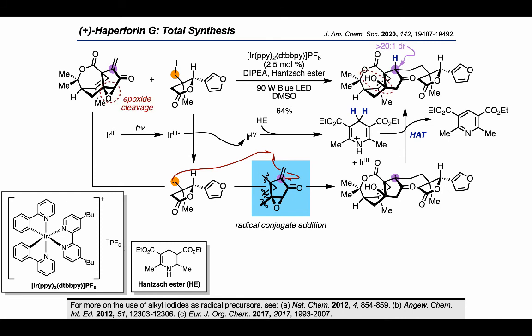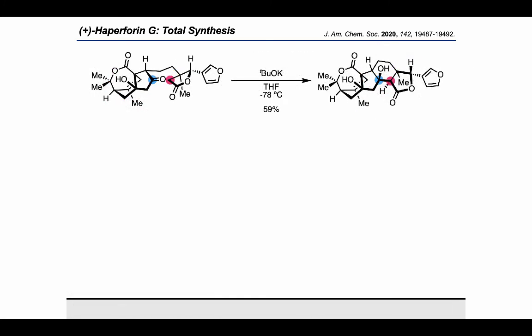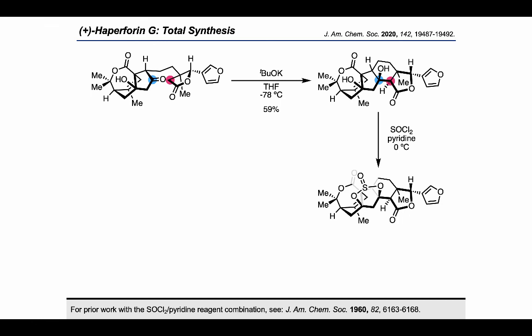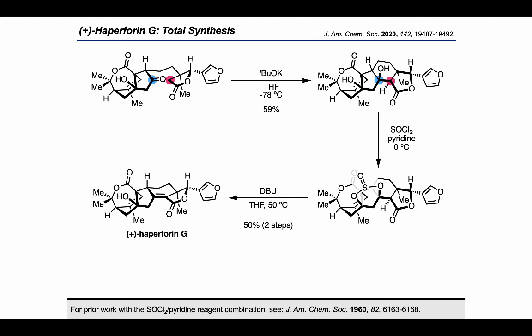Additionally, the epoxide moiety present in the starting material was found to open in the course of the reaction, resulting in the tertiary alcohol in the product. The authors continued by using potassium tert-butoxide to carry out a diastereoselective aldol addition. Then, in order to eliminate the newly formed tertiary alcohol, the authors tied up the two tertiary alcohols as a cyclic sulfate using thionyl chloride and treated it with DBU to form HAPR4NG, where this is the proton that needed to be deprotonated to complete the final elimination and complete the synthesis. This was a massive synthetic effort that reached into multiple areas of organic synthesis to approach an extremely challenging target.